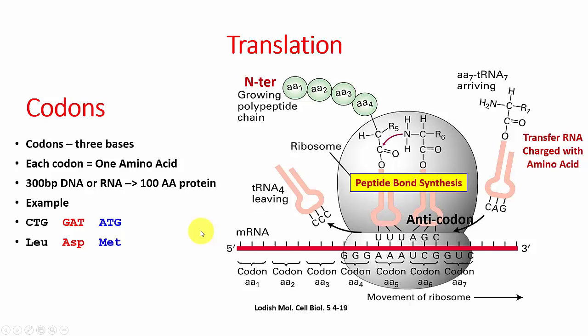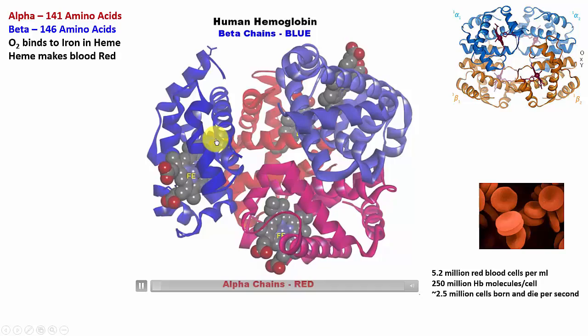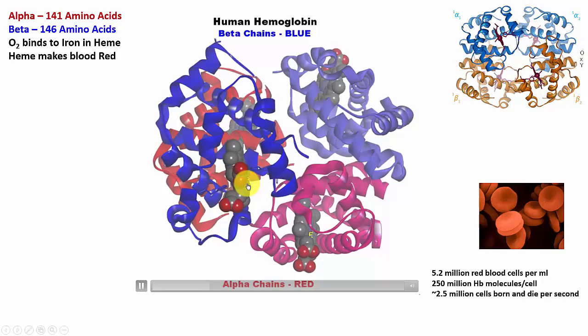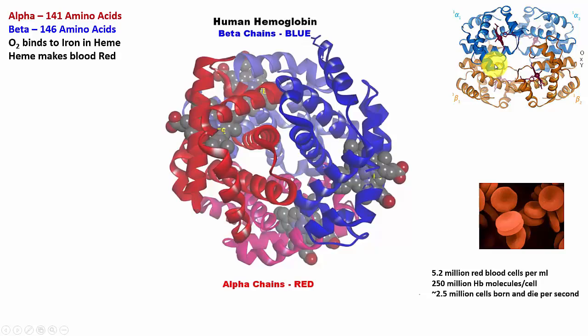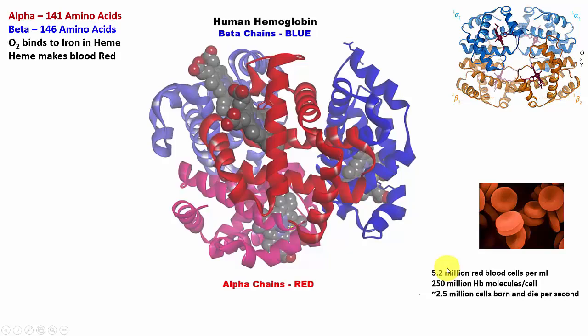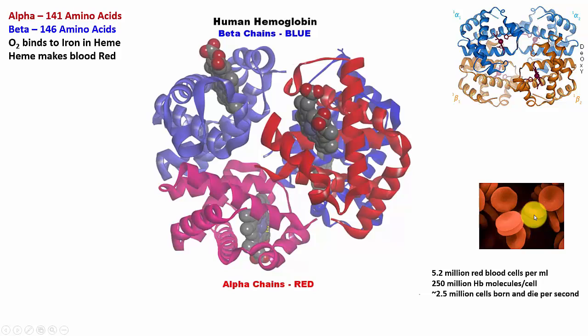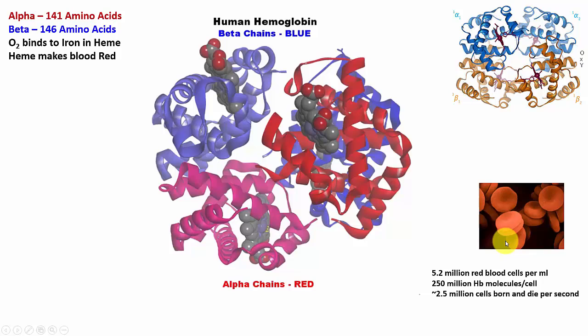Here's the hemoglobin molecule. It has two red subunits called alpha and two blue subunits called beta. Oxygen binds right there, carrying oxygen from our lungs up to our brain and our toes, and the hemoglobin molecule moves in a beautiful way when it binds oxygen. There are 5.2 million red blood cells per milliliter of blood, 250 million hemoglobin molecules in each cell, and we are making and destroying 2.5 million red blood cells per second. Life is a very fast-moving process at the molecular level.